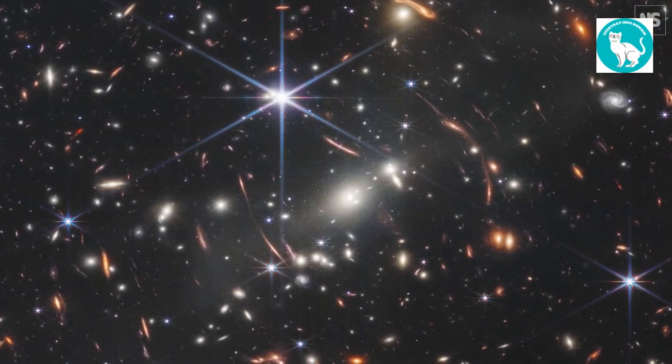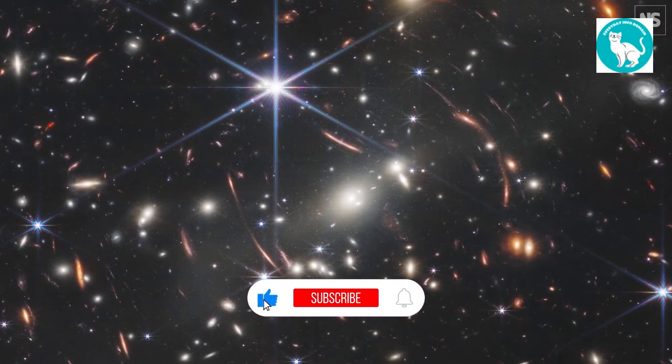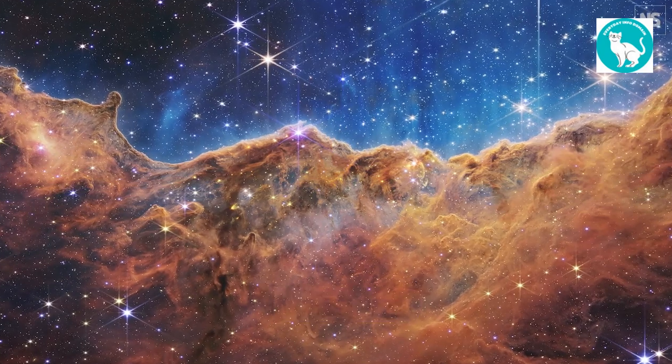The cluster is bending and warping light from the galaxies behind it, including some far-off red galaxies older than 13 billion years, by acting as a gravitational lens.